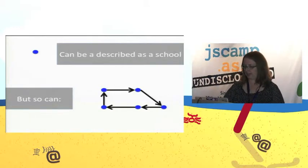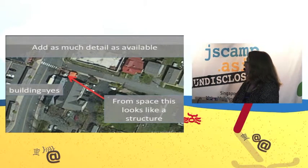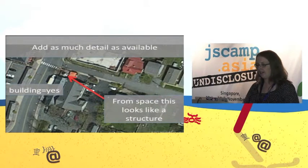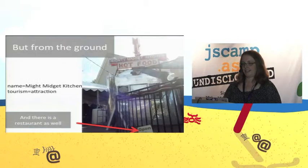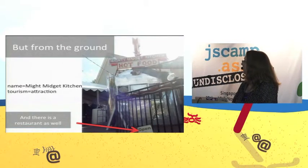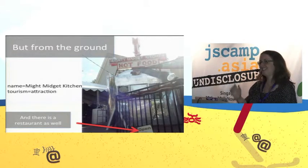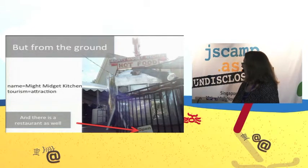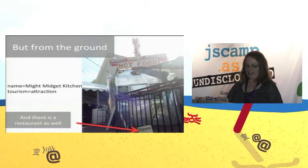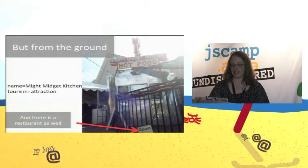Let's run through a quick scenario. When looking at things from space, you can't tell as much about them. This example is a small structure — it's kind of difficult to tell. You might just say it's a building. But if you go there, you can see it's actually a small aluminum structure — technically an airline fuselage turned on its side — and it's a restaurant and tourist attraction in one of the small towns outside of Washington, D.C.